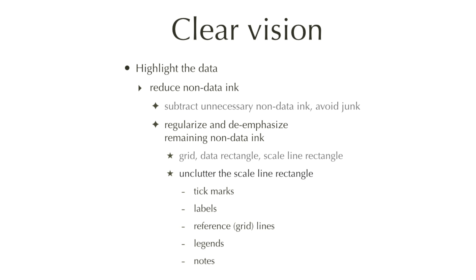After looking at the grid and the data rectangle, there's work to be done on the scale line rectangle — the rectangle surrounding the data. You want that scale line rectangle to be as uncluttered as possible. So you have to look at your tick marks, the number of tick marks and labels, whether you need a grid and how it looks, whether you really need a legend, and any notes placed on the graph to bring out important elements of the data.